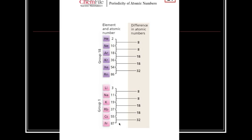If we look at the periodicity of atomic numbers, we see that it occurs very periodically. The difference between the noble gases: helium to neon is 8, neon to argon is also 8, argon to krypton is 18, krypton to xenon is 18, and xenon to radon is 32. So we see a periodic increase on the Periodic Table.